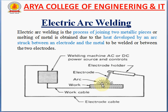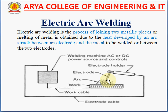In this process, an electric arc is produced by bringing two conductors — that is, the electrode and metal plate — connected to a suitable source of electric current momentarily in contact and then separated by a small gap. The arc glows due to ionization and gives intense heat. The heat developed is utilized to melt the work piece and filler metal. In this method, no mechanical pressure is applied, so this welding is also known as non-pressure welding.